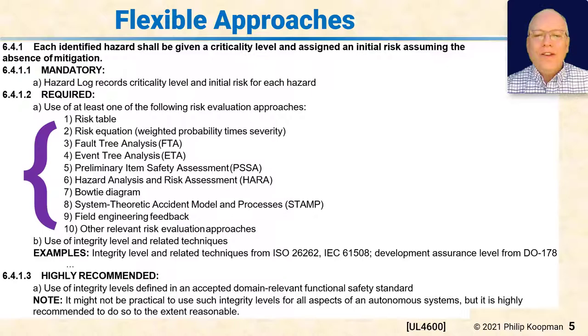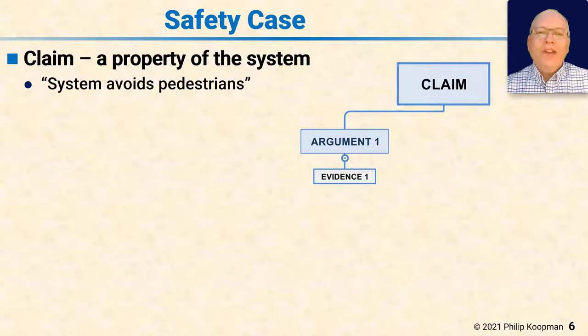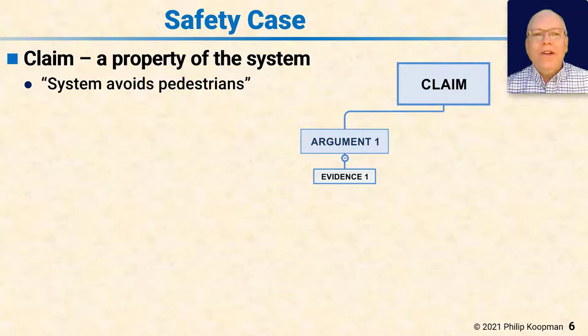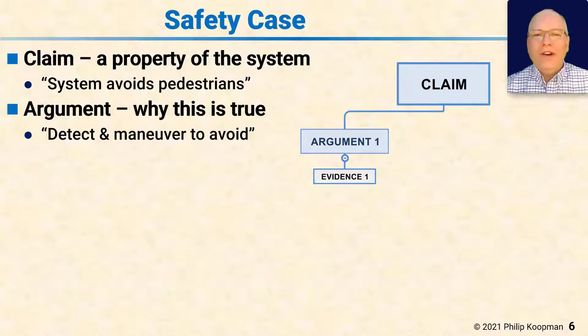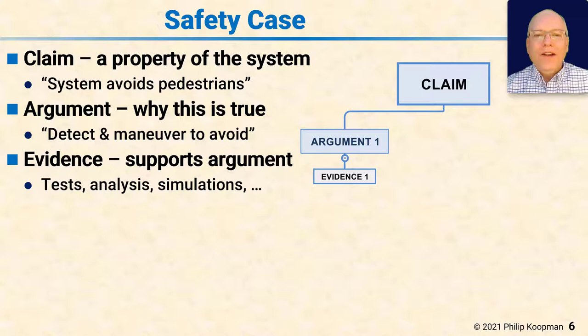All these clauses operate in the context of a safety case, and you absolutely have to have a written safety case to conform to 4600. A safety case has three parts: a claim or goal, such as 'system avoids pedestrians'; an argument for why it's true, such as 'we plan to detect and maneuver to avoid pedestrians'; and evidence — you can't just argue, you have to have evidence such as tests, analysis, or simulations behind the argument. The entire safety case is a chain of claims at the top, arguments in the middle, and evidence at the leaves.